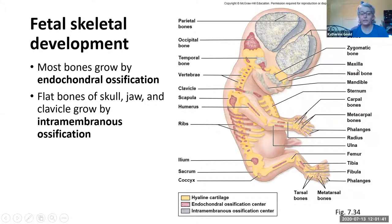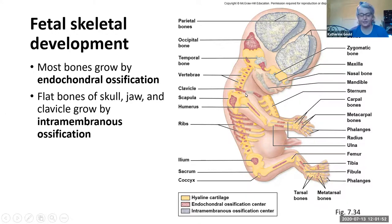Most of the bones grow by endochondral ossification. The flat bones of the skull, a couple of the facial bones, the jaw, and part of the collarbone grow by intramembranous ossification. But everything else has to put down cartilage first and then become bone.